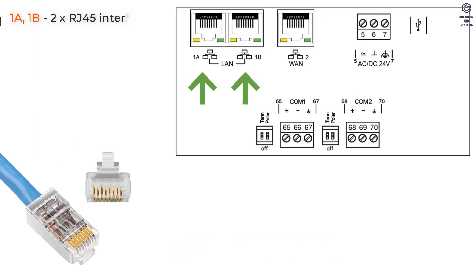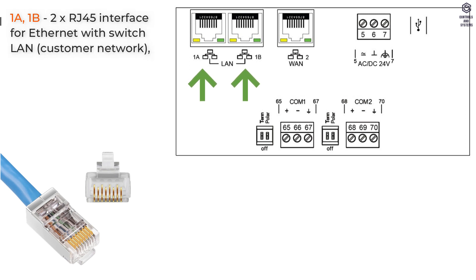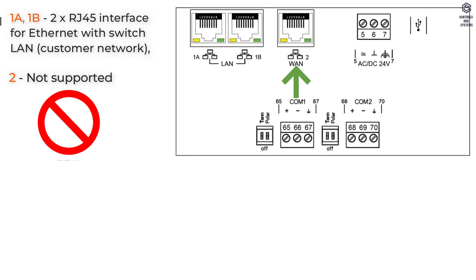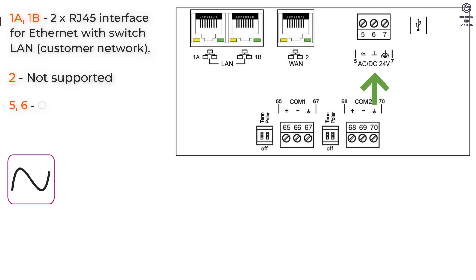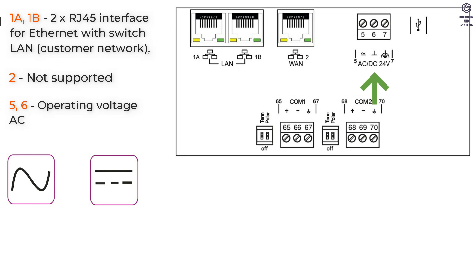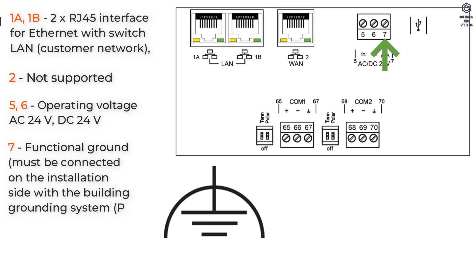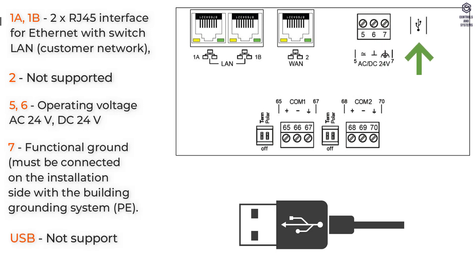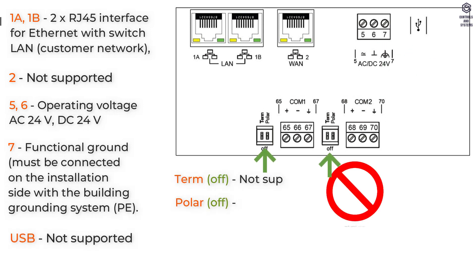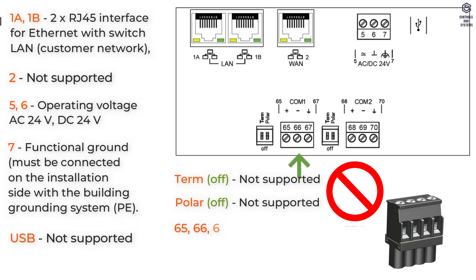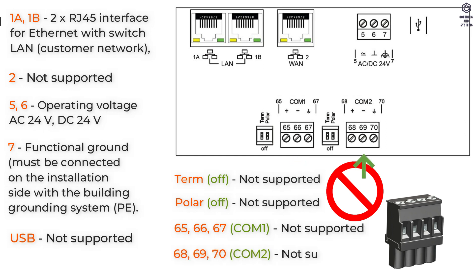Connection terminals: terminal 1A and 1B are two RJ45 interfaces for Ethernet with switch LAN ports, terminal 2 is not supported port, terminal 5 and 6 is operating voltage AC 24V or DC 24V, terminal 7 is functional ground, USB port, term and polar ports, terminals 65, 66, and 67 are communication port 2.